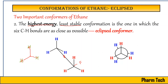For understanding purposes, we show a small angle, but you have to consider that this angle is effectively zero in the eclipsed form. In this way, for the ethane molecule, you can draw conformations either by sawhorse projection or by Newman projection. There are two extreme structures: the lowest energy staggered conformer and the highest energy eclipsed conformer. Between these two extremes, other conformations are also possible.